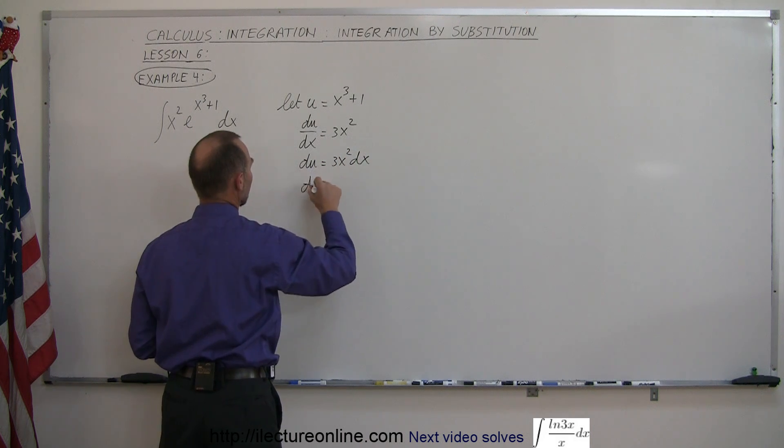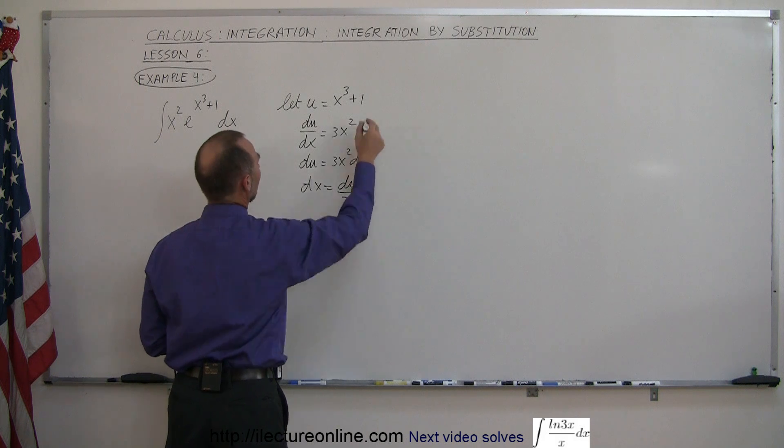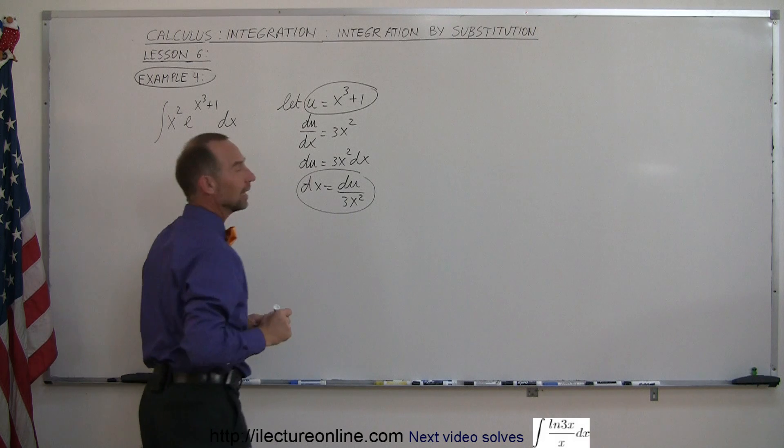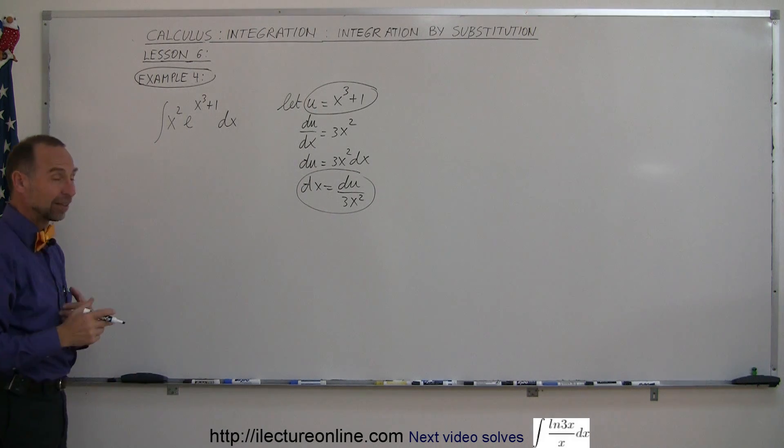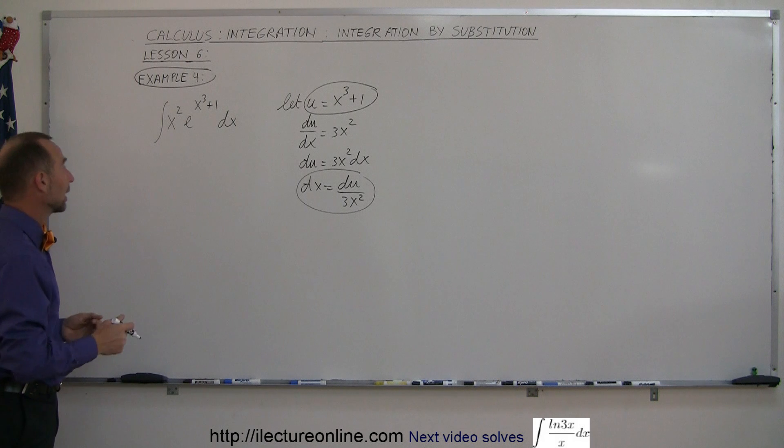And solving this for dx, you get dx is equal to du divided by 3x squared, and then you substitute this inside the integral sign. That's the standard format, that's how you do everything, and then when you substitute back in, what do you get?